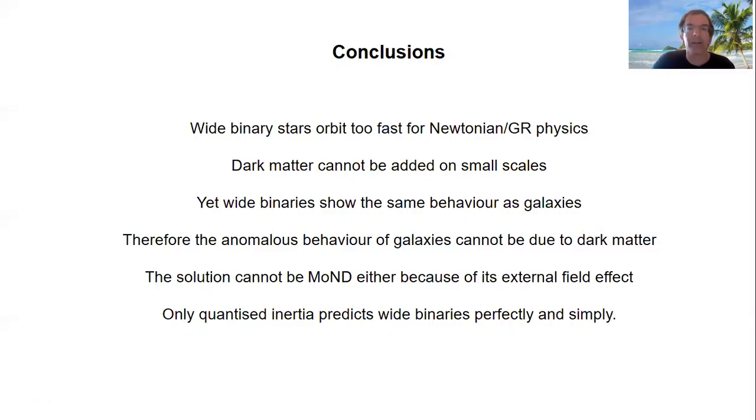Okay, so the conclusions are that wide binary stars orbit far too fast for Newtonian physics or general relativity. Now, dark matter cannot be added to fix this on small scales, because it has to stay spread out.